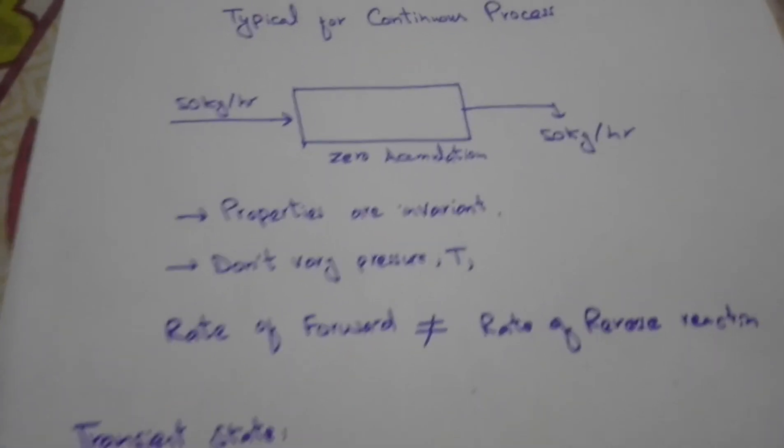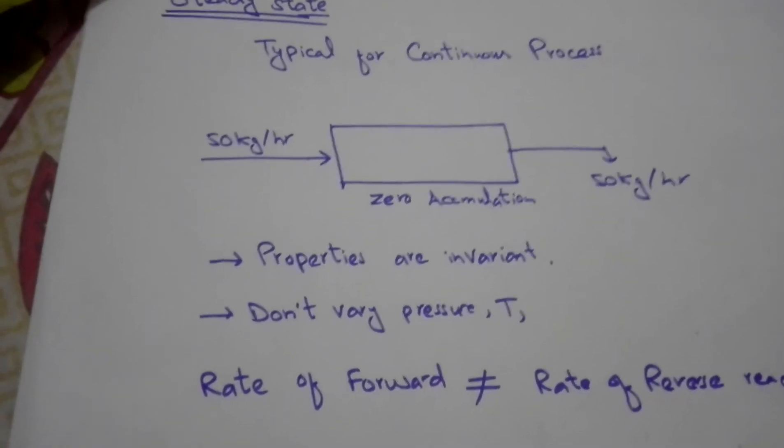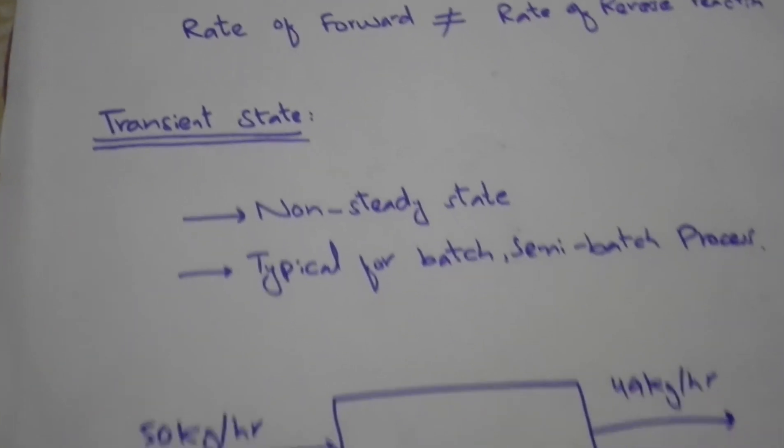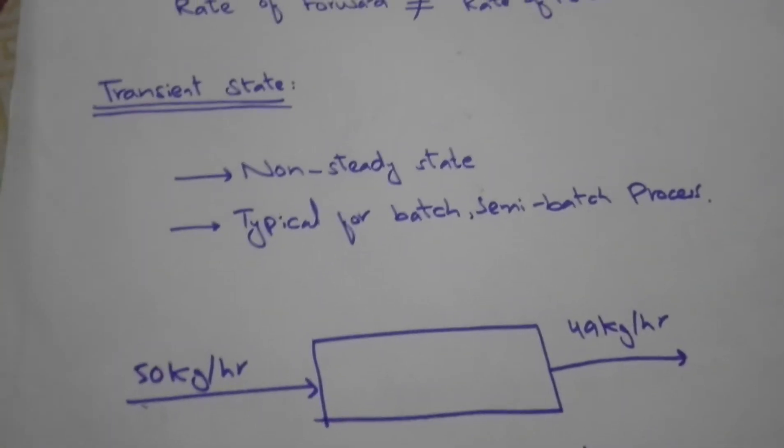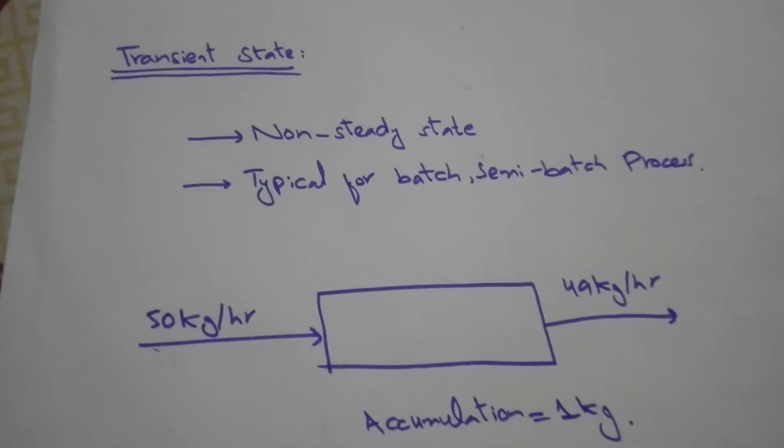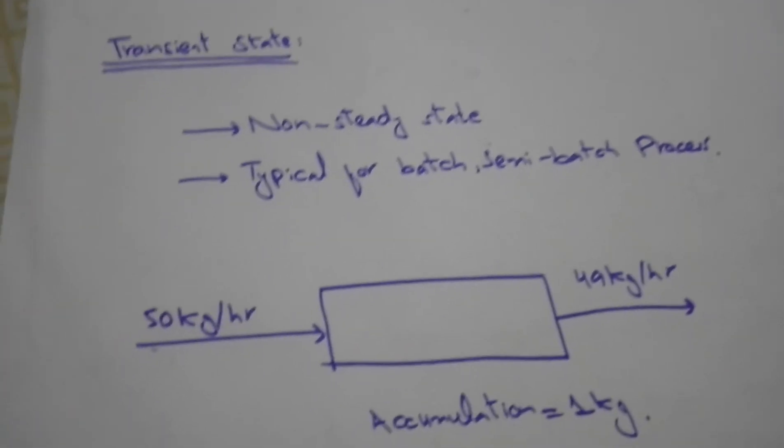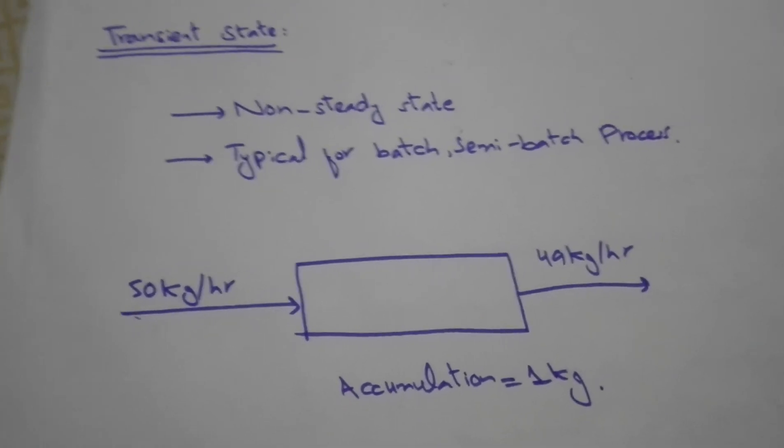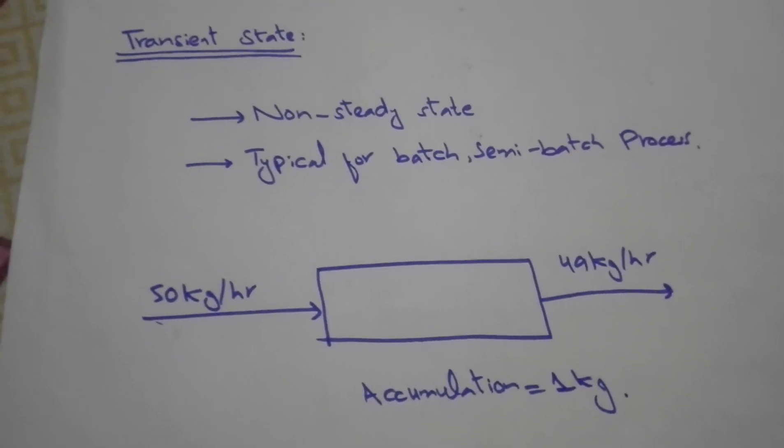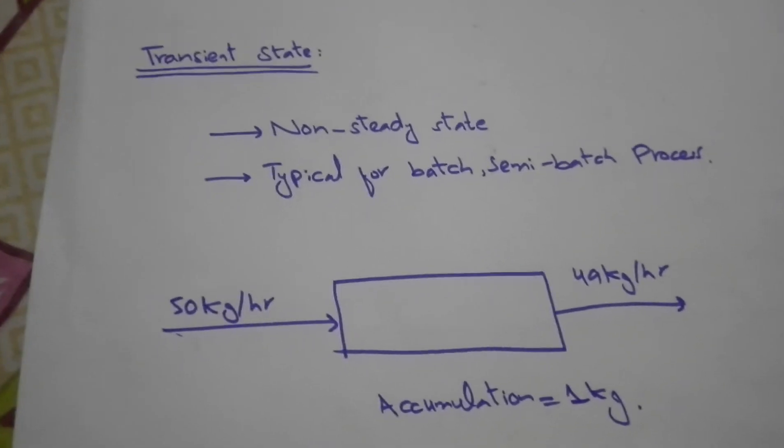The next thing is transient state, or non-steady state. We are putting in 50 kg but only getting 49 kg out. Accumulation is 1 kg. This is transient state.